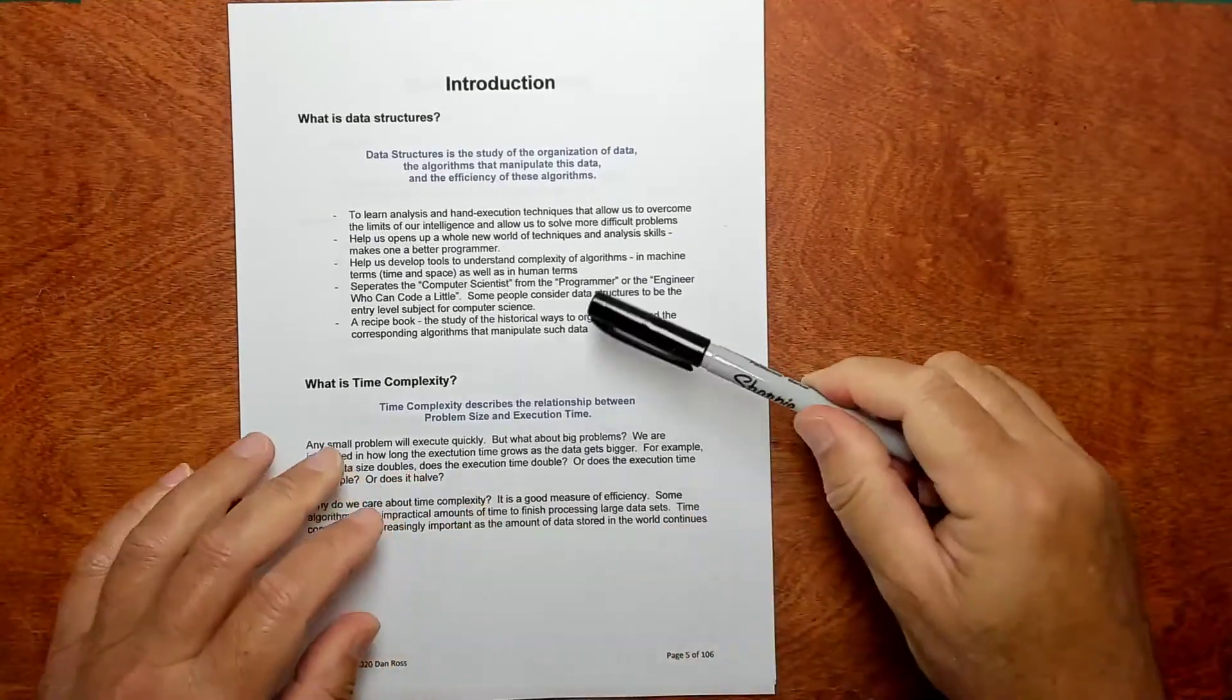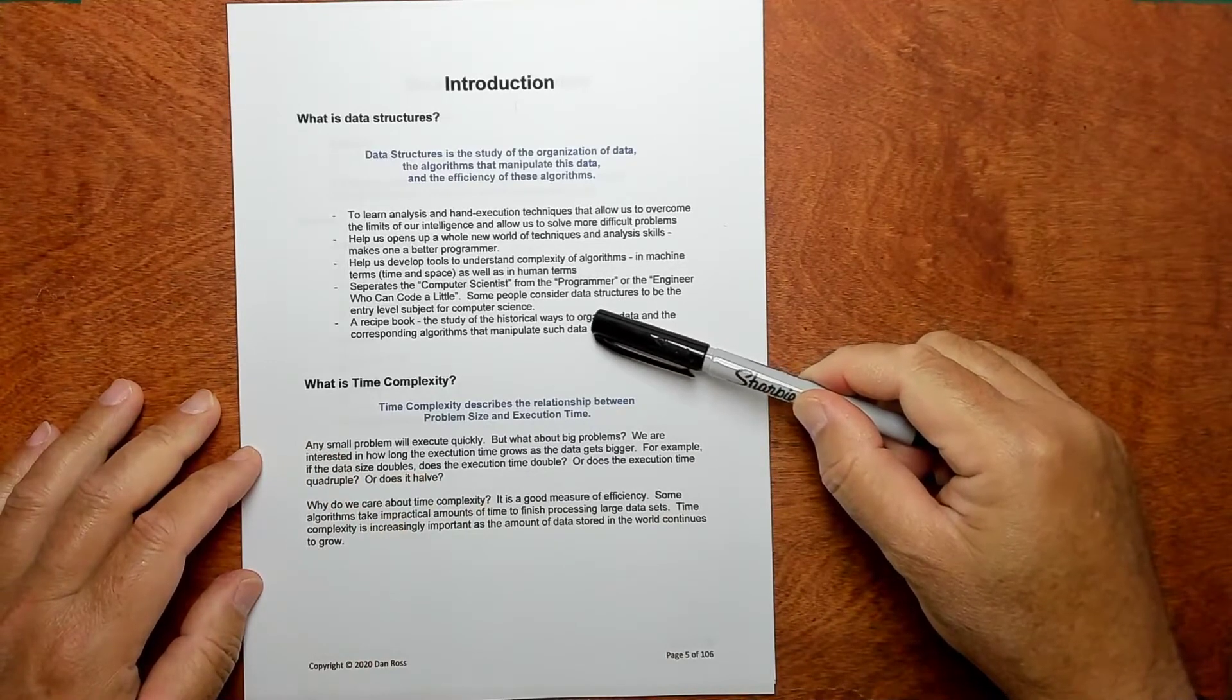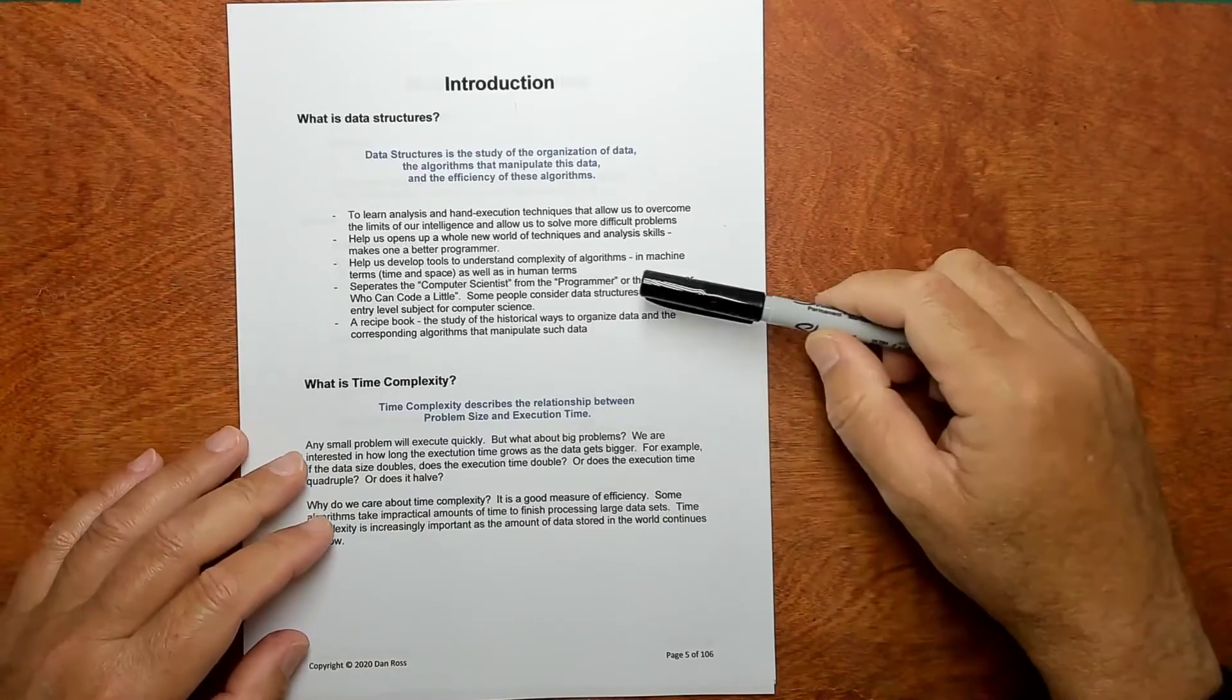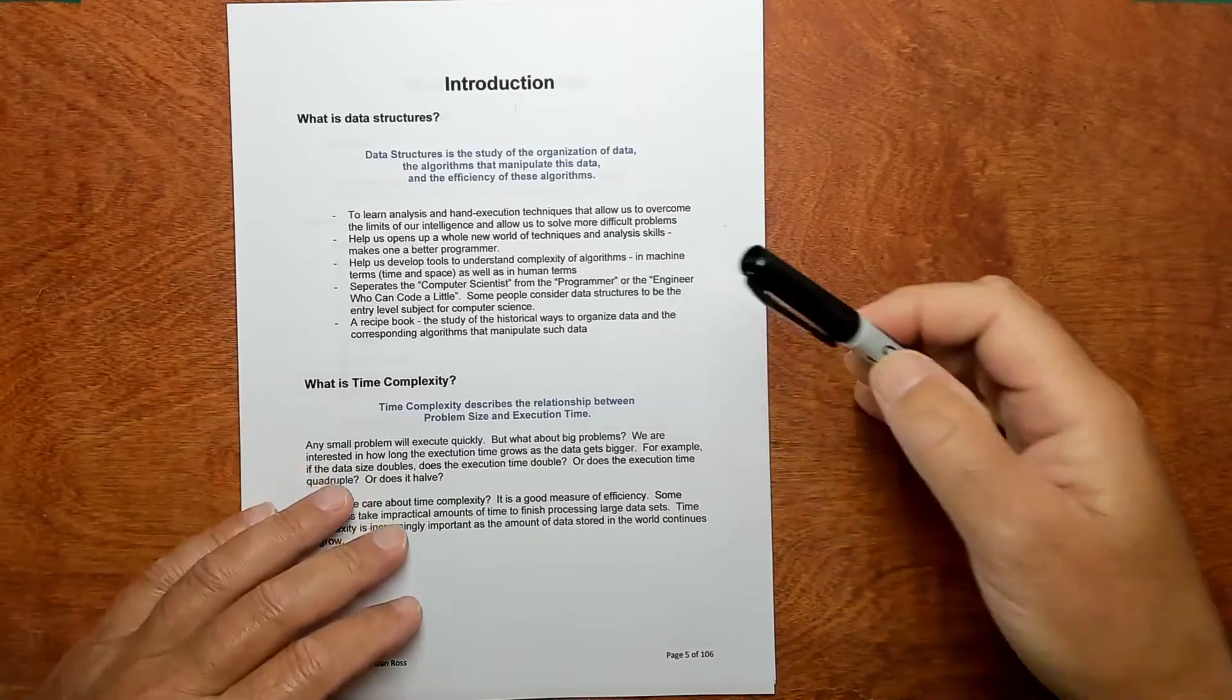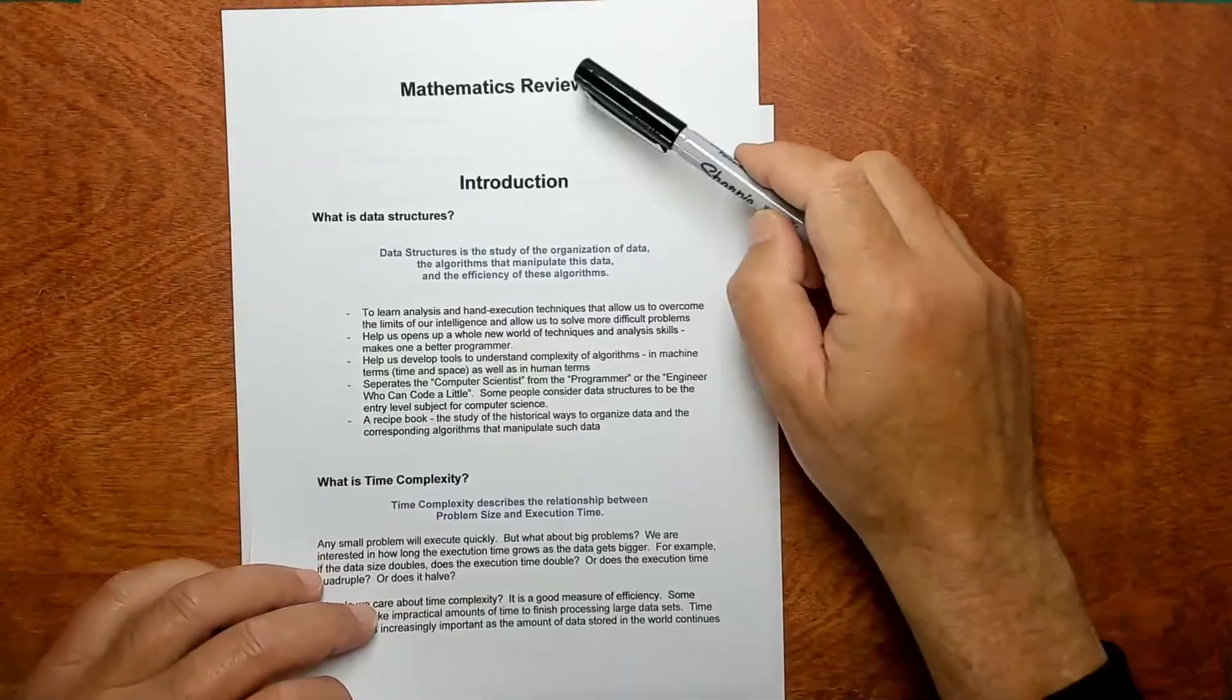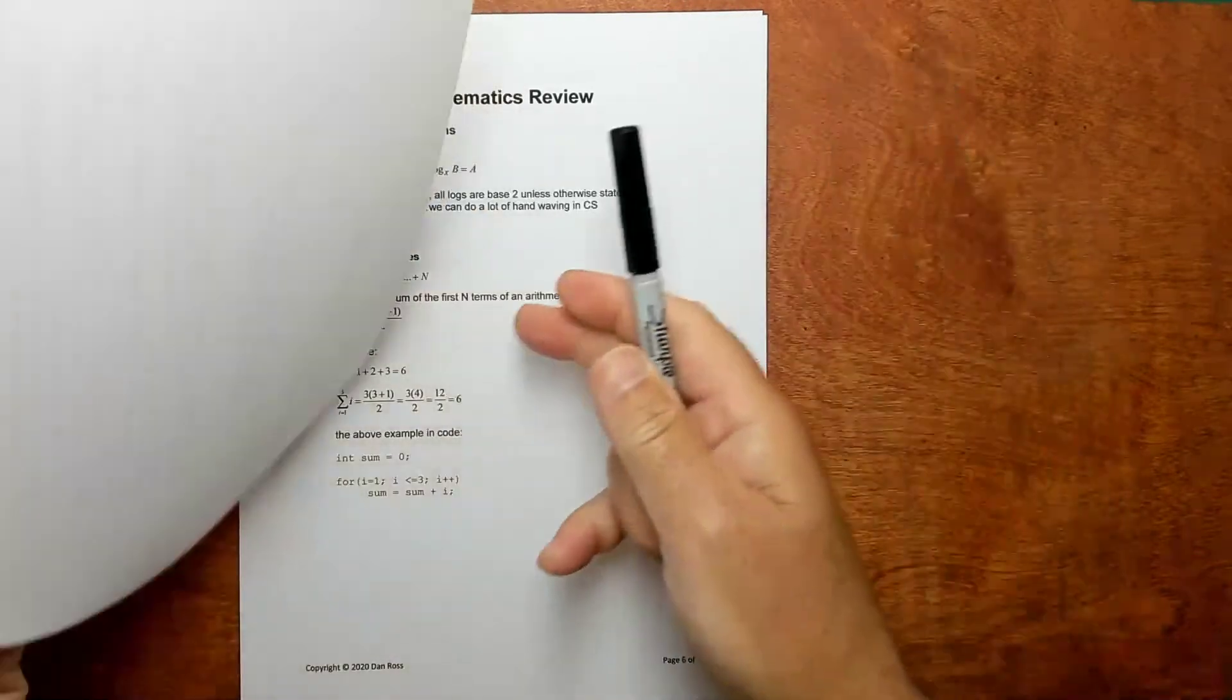We're going to look at a lot of different algorithms, like a recipe book type approach. Look at algorithms that have been done in the past, analyze them, determine their big O, talk about are they good, are they bad, that kind of thing. Before we do that, we have to go to some mathematics review. Just some basic math that's going to come up throughout the course.